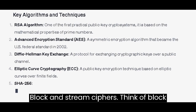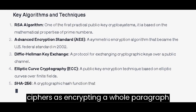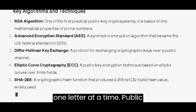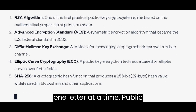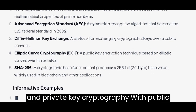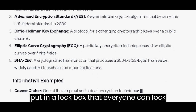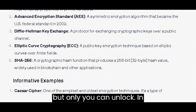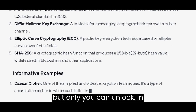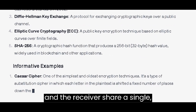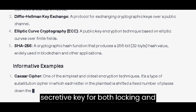Block and Stream Ciphers: think of block ciphers as encrypting a whole paragraph at once, while stream ciphers focus on one letter at a time. With Public Key Cryptography, your encoded letter is put in a lockbox that everyone can lock, but only you can unlock. In Private Key Cryptography, both the sender and the receiver share a single, secretive key for both locking and unlocking.